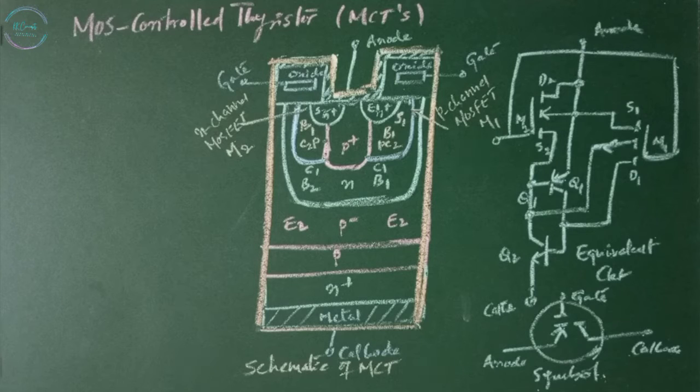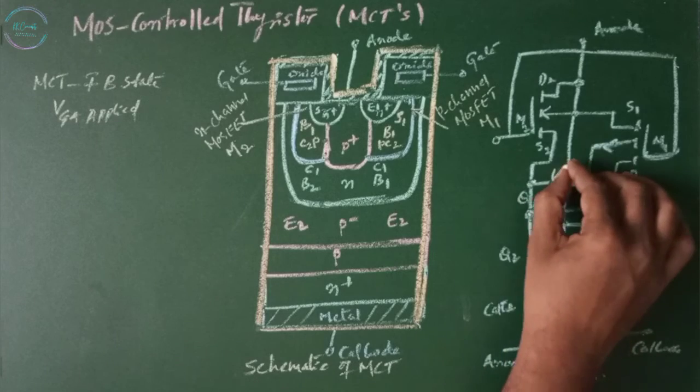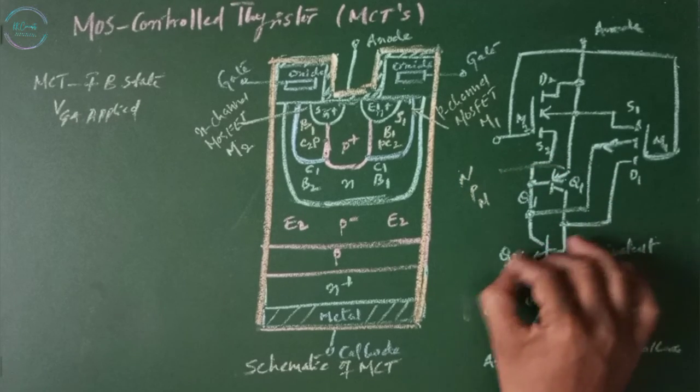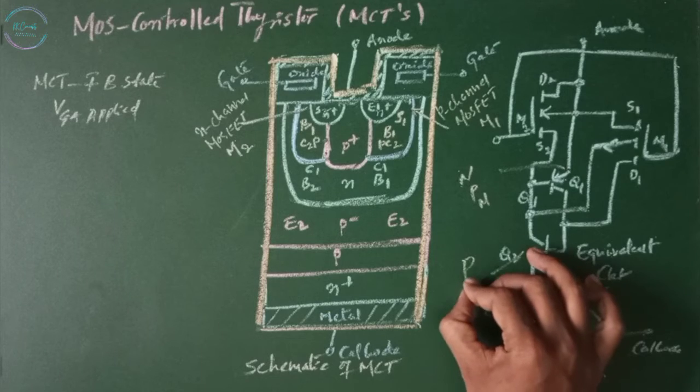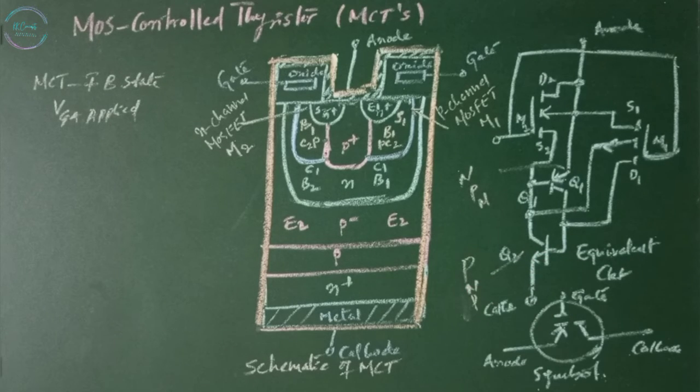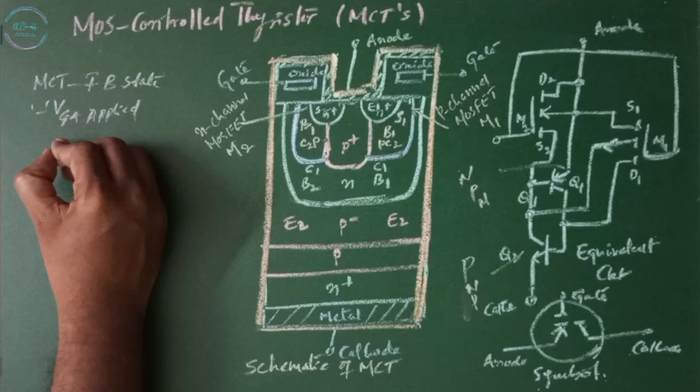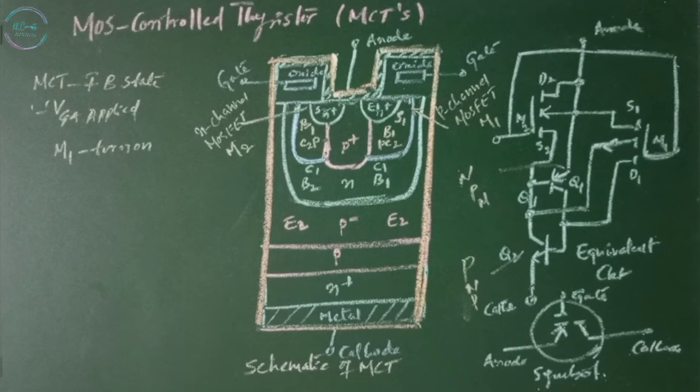Due to the NPNP structure rather than PNPN structure of a normal SCR, the anode serves as the reference terminal with respect to which all gate signals are applied. Let us assume the MCT is in forward blocking stage and negative VGA is applied, turns on P-channel MOSFET M1 thus providing the base current for the transistor Q2.